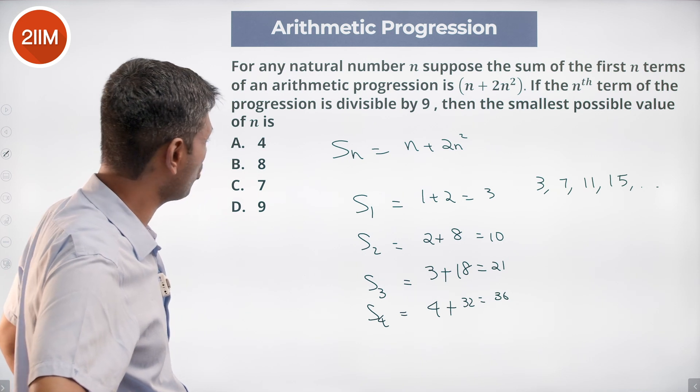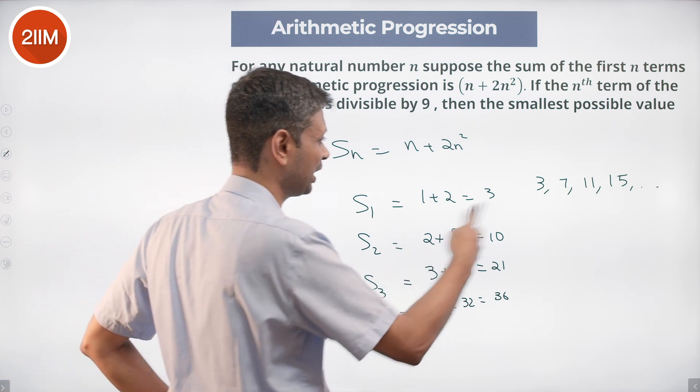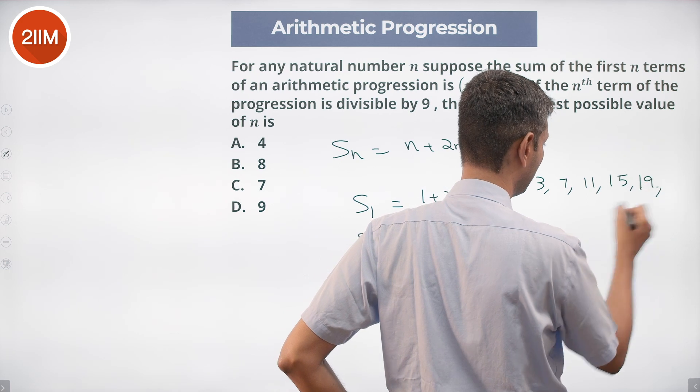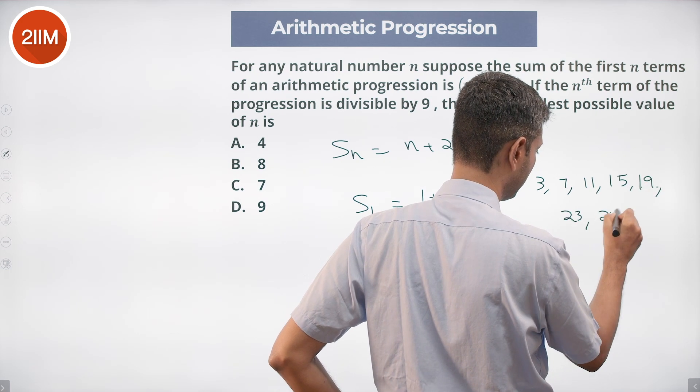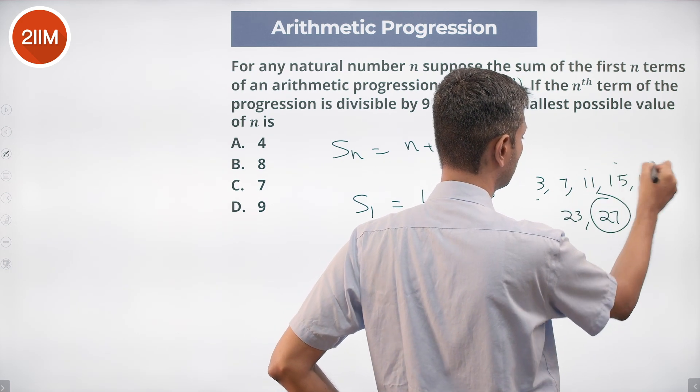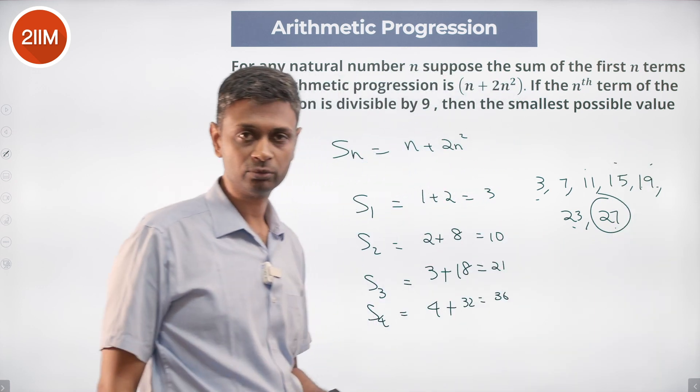If the nth term of the progression is divisible by 9, the smallest possible value of n is: 3, 7, 11, 15 didn't work, 19, 23, 27—this works! Counting: 1, 2, 3, 4, 5, 6, 7. The 7th term works.